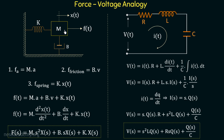To summarize: mass of mechanical system is analogous to inductance; the coefficient of viscous friction is analogous to resistance; and spring constant K is analogous to reciprocal of capacitance 1/C. Also, in this mechanical system there was only one displacement x(t), and hence in the electrical network there is only one current i(t). So in case of force voltage analogy, the number of displacements in mechanical systems will be equal to the number of currents in the electrical network.